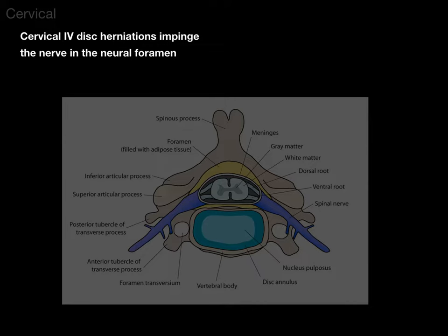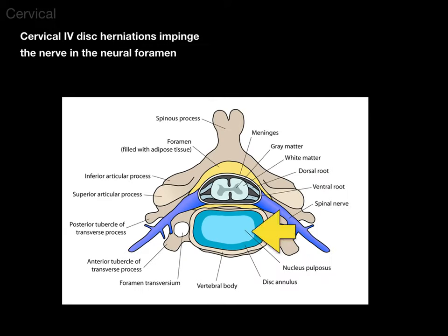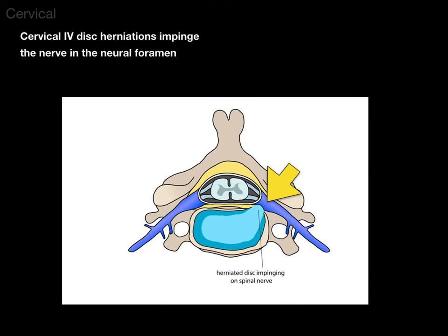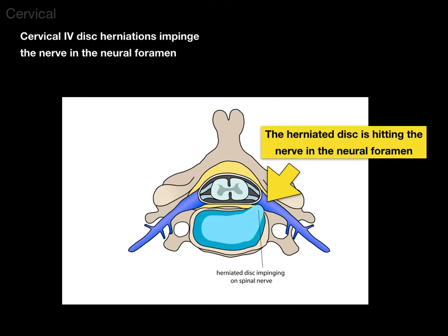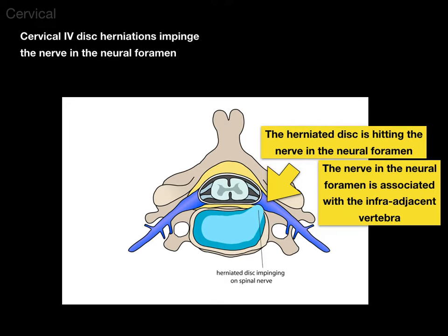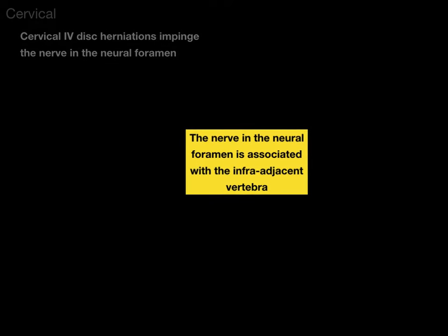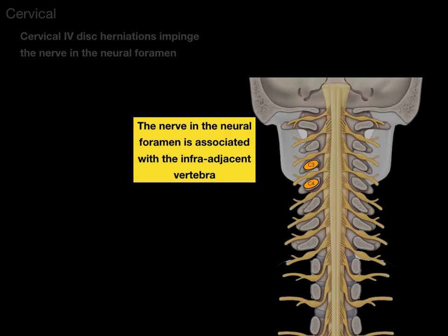Cervical intervertebral disc herniations impinge the nerve in the associated neural foramen. There's an intervertebral disc, there's the nerve, and we see that the herniated disc is hitting the nerve in the neural foramen. Remember that the nerve in the neural foramen is associated with the infra-adjacent vertebra. So with C3 and C4 vertebrae and a C3-C4 intervertebral disc, if it impinges a nerve, it's the C4 nerve.